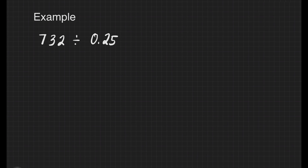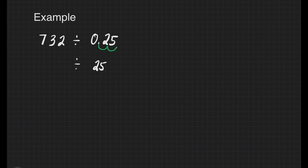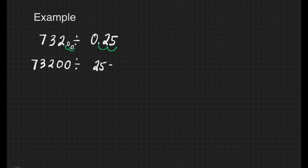We have another example: 732 divided by 0.25. Since our divisor is a decimal, it has to be changed into a whole number so it's easier to divide. We move the decimal point 2 places — that's place 1 and 2 — making it 25. Whatever we did to our divisor, we have to do it also in our dividend. The decimal point is at the back of 732, and we move it 2 places, adding 2 zeros for the empty spaces. That gives us 73,200 divided by 25 is equal to blank — our new division sentence.